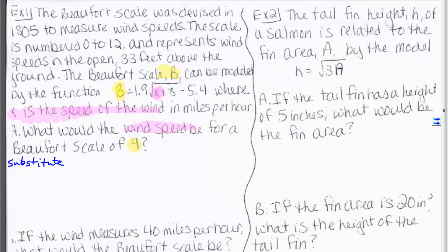The Beaufort scale was devised in 1805 to measure wind speeds. This scale is numbered 0 to 12 and represents wind speeds in the open, 33 feet above the ground. It can be modeled by the function b equals 1.9 times the square root of x plus 8 minus 5.4, where x is the speed of the wind in miles per hour.